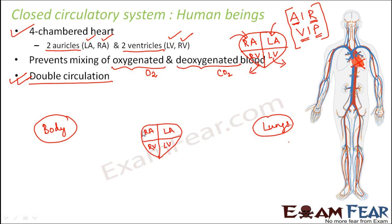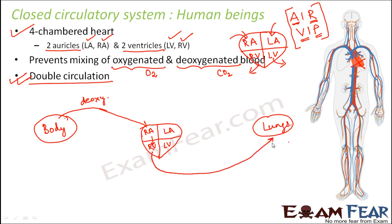The right auricle receives blood from different parts of the body. This blood is deoxygenated because it has collected carbon dioxide from various cells. The right auricle then sends this deoxygenated blood to the right ventricle, and the right ventricle — being the pumping chamber — pumps this deoxygenated blood out to the lungs.